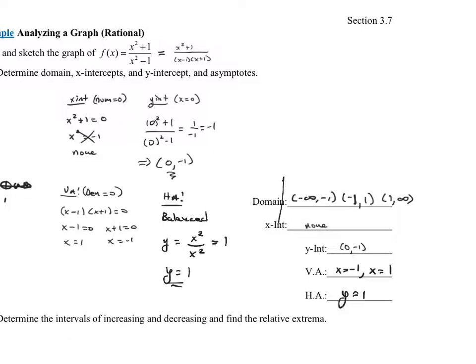To summarize the analysis of the original function: the domain is split at negative 1 and 1; there are no x-intercepts; the y-intercept is the point 0, negative 1; vertical asymptotes are x equals negative 1 and x equals 1; and the horizontal asymptote is y equals 1. That's a lot of information to help us graph this function without using any technology.